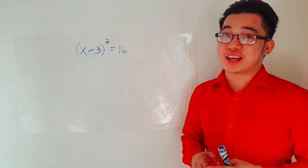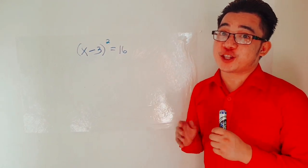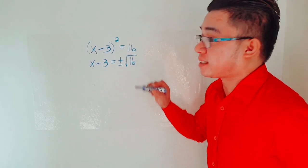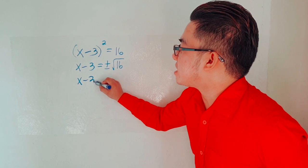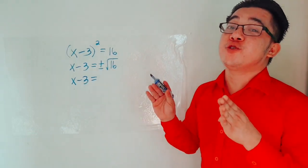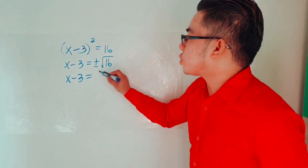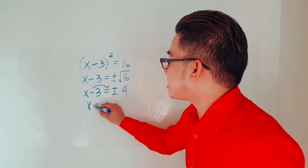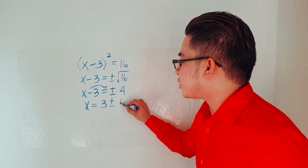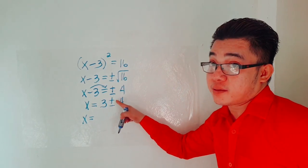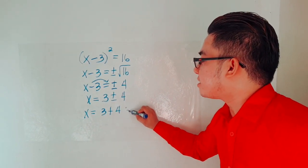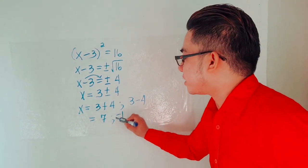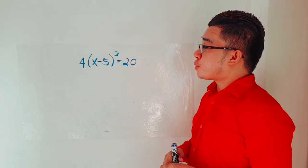For example number 5: the quantity of x minus 3, squared, is equal to 16. The first process is to extract square roots. So x minus 3 is equal to positive and negative square root of 16. Think of a number that when multiplied by itself gives 16 — that is 4. So we have positive and negative 4. Then transpose negative 3 to the other side, so x is equal to positive 3 plus and minus 4. Separating into two solutions: 3 plus 4 equals 7, and 3 minus 4 equals negative 1. Therefore, the roots of x are 7 and negative 1.